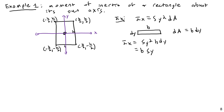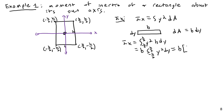B times the integral of y squared dy. Most importantly, I need to include the bounds of integration. Because we're integrating in y, we go from the lower y value to the upper y value: negative H/2 to H/2. Taking the integral gives B times [y³/3] evaluated from −H/2 to H/2.